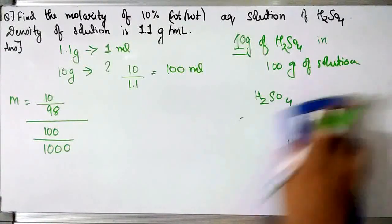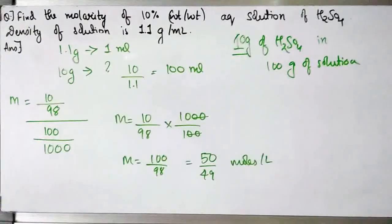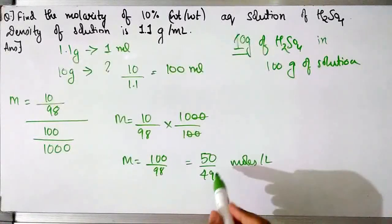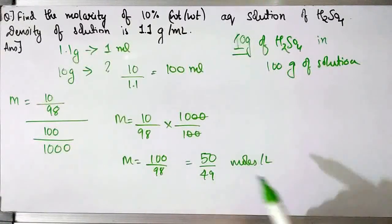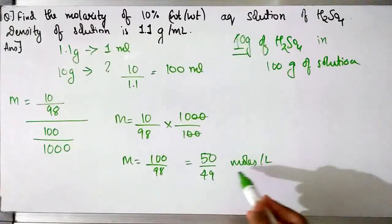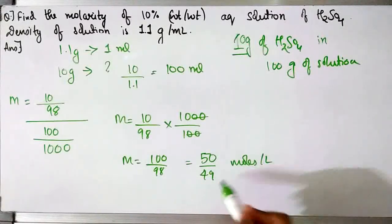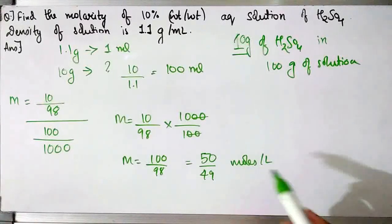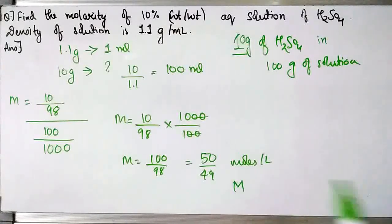When you further solve this, you get the value to be 50 by 49. You can further convert it to decimals if you want. The answer will be 50 by 49 moles per litre — that is the molarity.